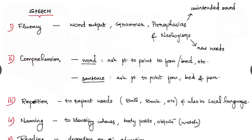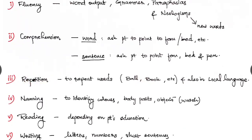Next is the comprehension with word and sentence. With the word, ask the patient to point to fan or bed. Comprehension with sentence, ask the patient to point to fan, then bed and lastly to pen. And next check for the repetition, to repeat words like ball, book and also in local language.